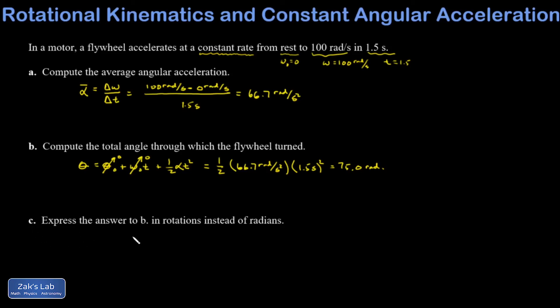Part C, express the answer to B in rotations instead of radians. So this is very typical for these problems to have to convert back and forth between rotations and radians. So I have 75.0 radians, and it's just a little unit analysis problem. I have one rotation for every 2 pi radians. And I can find out how many times this flywheel actually turned, and I get 11.9 rotations.